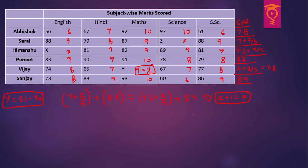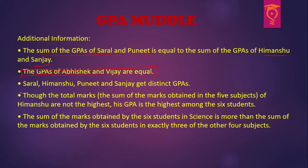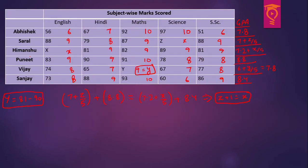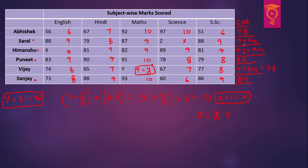There are too many possibilities, so we need other additional information. The third point says Saral, Himanshu, Puneet and Sanjay get distinct GPAs. This means none of x or z could make Saral or Himanshu get a GPA of 8.8, so small x cannot be 8 and small z cannot be 9. Also z cannot be 7 (Saral's GPA would become 8.4, matching Sanjay), and z cannot be 10 because then x would have to be 11.